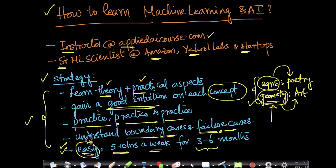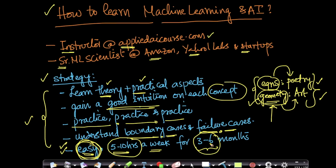Most importantly, remember: learning AI is not at all hard. If you try to break down the mathematics into diagrams, if you try to break down dense equations into poetry — this is my fundamental philosophy: equations in mathematics are like poetry, geometry is like art. If you're willing to put in five to ten hours a week for three to six months, effort is the only prerequisite. All the very best in your endeavors to learn and excel in machine learning and AI.